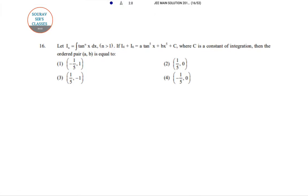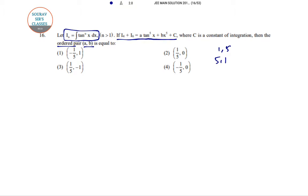This question is of integration. In is integration of tan to the power nx dx where n is greater than 1, and I4 plus I6 is a tan to the power 5x plus bx to the power c, where c is the integrating constant. We need to find the ordered pair of b. Ordered pair means 1,5 is not same as 5,1. Let's do it.